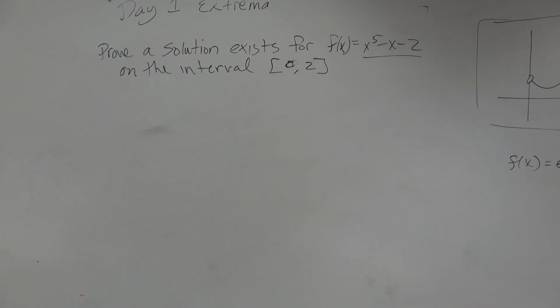Let's prove a solution exists for f of x equals x to the fifth minus x minus 2 on the interval 0 to 2.